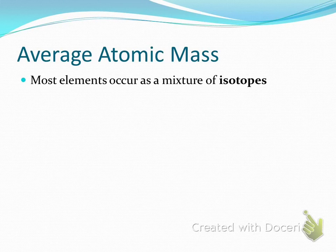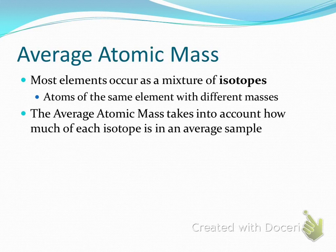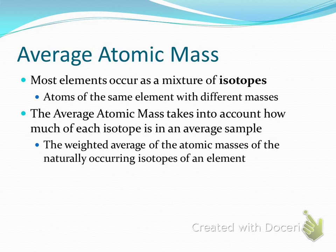So isotopes are atoms with different masses — that's already in your notes. Average atomic mass takes into account how much of each isotope is found in a particular sample. The average atomic mass might be 99% of nitrogen-14 and 1% of nitrogen-15, but that 1% is going to change the average. That's why it's 14.007 — it's thrown off just a very tiny bit. Average atomic mass is not a regular average; it's a weighted average. That means we don't just divide by the number of isotopes — I'm going to give you a formula to calculate that weighted average.